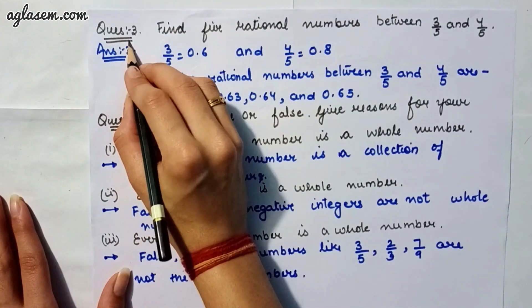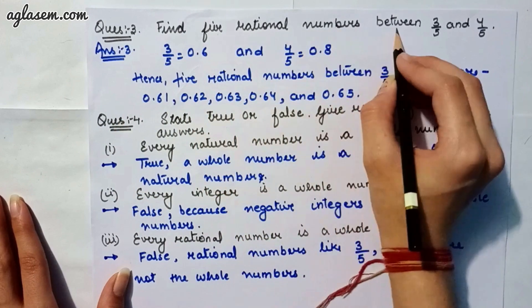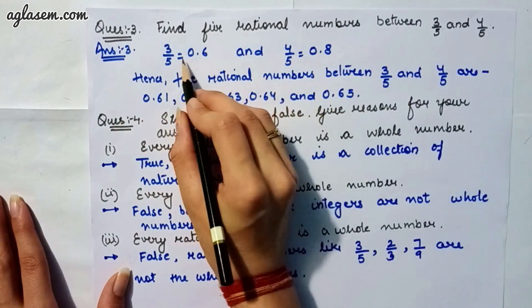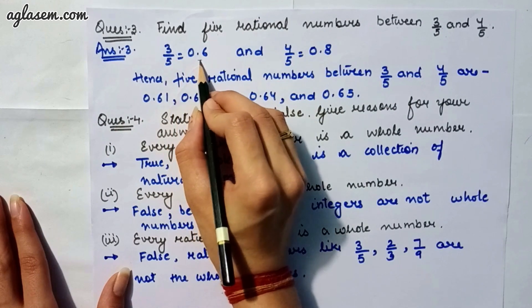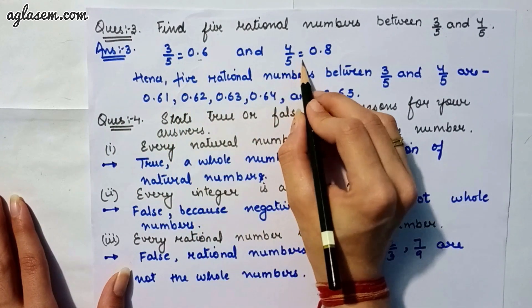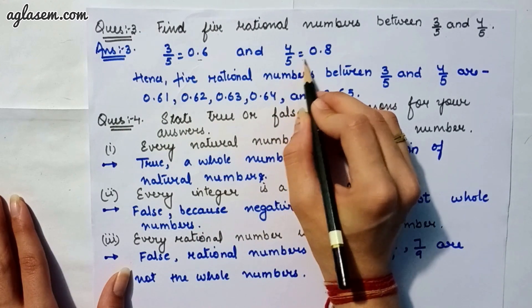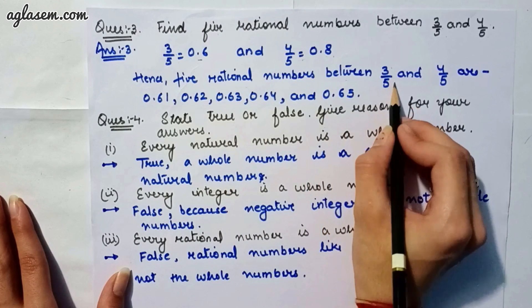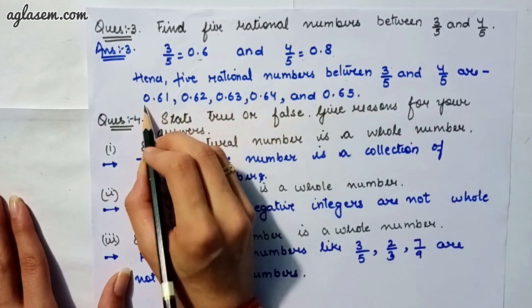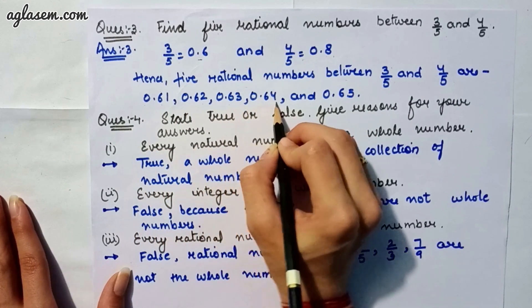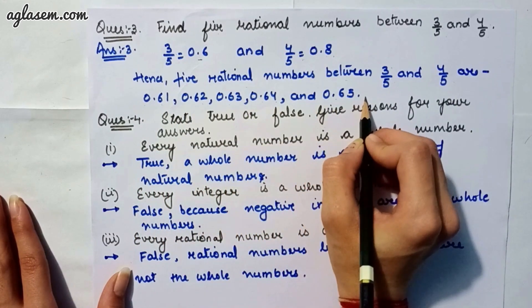Moving to our third question which says, find 5 rational numbers between 3 upon 5 and 4 upon 5. So, 3 upon 5 will give you in decimals 0.6 and 4 upon 5 will give you in decimals 0.8. So, the 5 rational numbers between 3 upon 5 and 4 upon 5 are 0.61, 0.62, 0.63, 0.64 and 0.65.